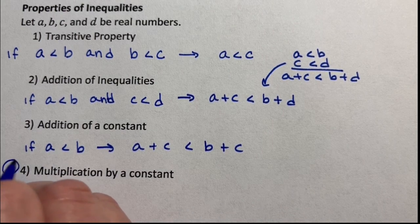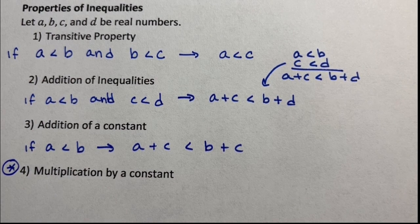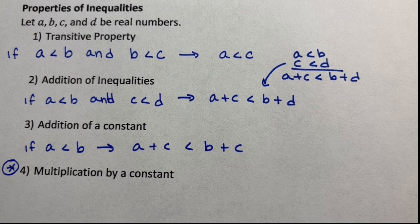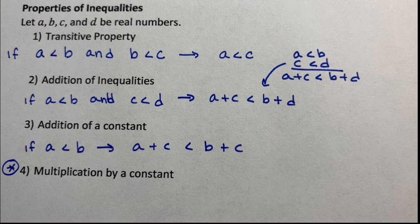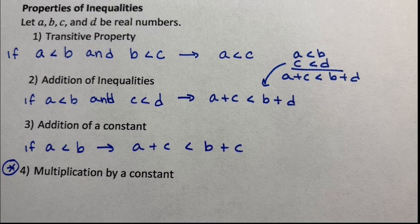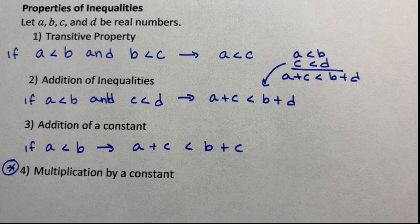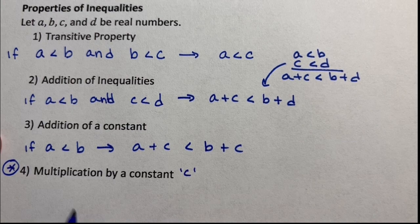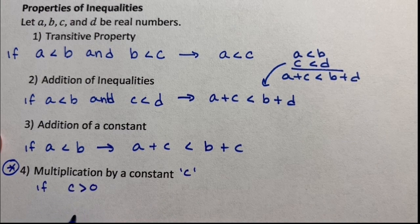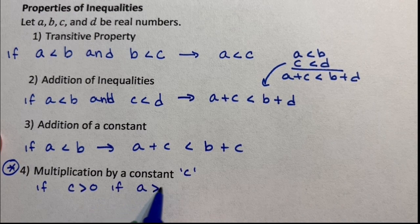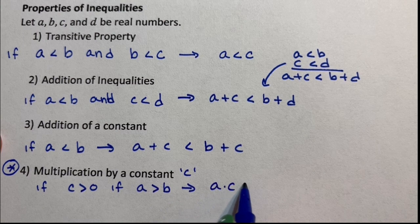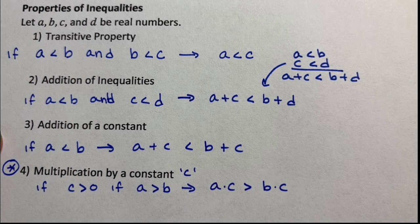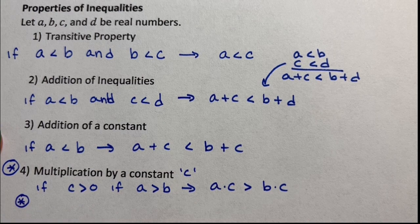This last one is the important one. Everything else we've done is based on stuff you know that you've done in equalities. It's based on things you're comfortable with and you really do understand. This last one is the one that makes inequalities different than equalities. It makes things different and unique. Multiplication. So you're multiplying by a constant C. If C is greater than 0, then nothing is different. If A is greater than B, then A times C is greater than B times C. This is exactly what we are used to. There is nothing different there.